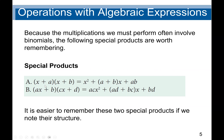Because multiplications involving binomials are performed often, we have the following special products that are good to remember. If I have (x plus a)(x plus b), it's the same as x squared plus (a plus b)x plus ab. And if we have (ax plus b)(cx plus d), it's the same as acx squared plus (ad plus bc)x plus bd.